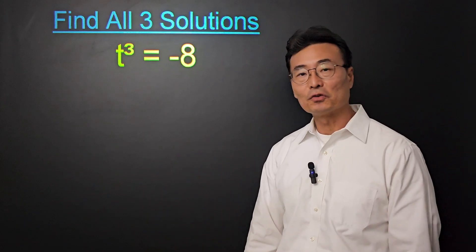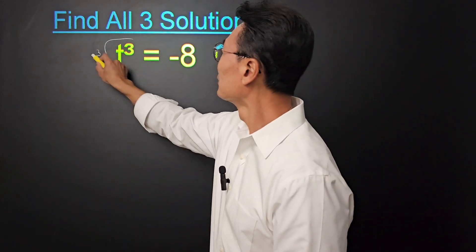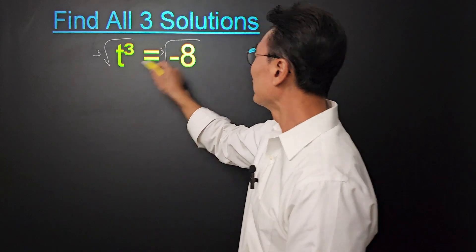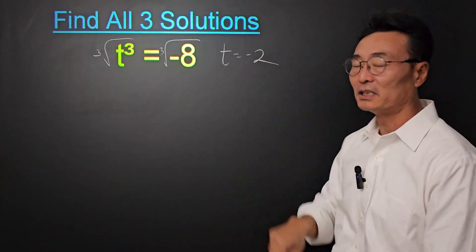Given the equation t cubed equals negative 8, the first thing we want to do is take the cube root of the left and right side, giving us t equals negative 2.